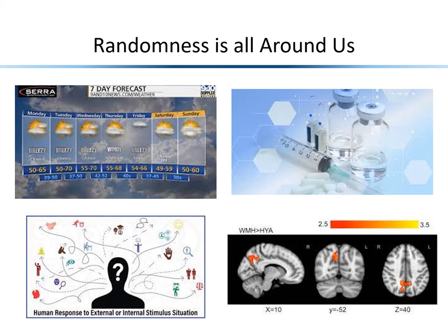Finally, going back to the neuro domain, the brain's response to external stimuli also has some randomness. We can use fMRI to get a rough idea about what regions of the brain might activate in response to a stimulus, but this is highly variable across subjects. For a new subject, we cannot say with 100% certainty which parts of the brain will activate and to what extent.